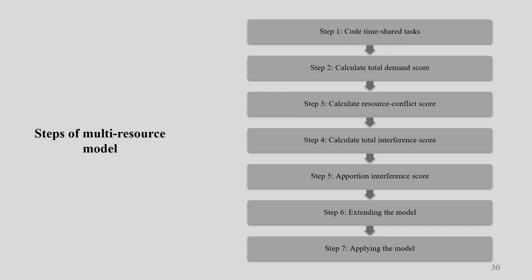Now let us go through the steps we are going to follow. The first step is coding the time-shared task — we start with coding. Once coding is done, we calculate the total demand score. This is very much skill-based; from a lot of learning, you will be able to code them. There are always possible differences in opinion when coding, as we will see in the next slides.